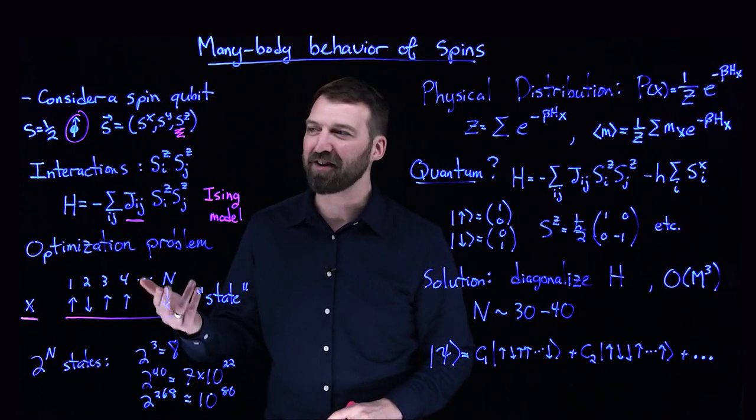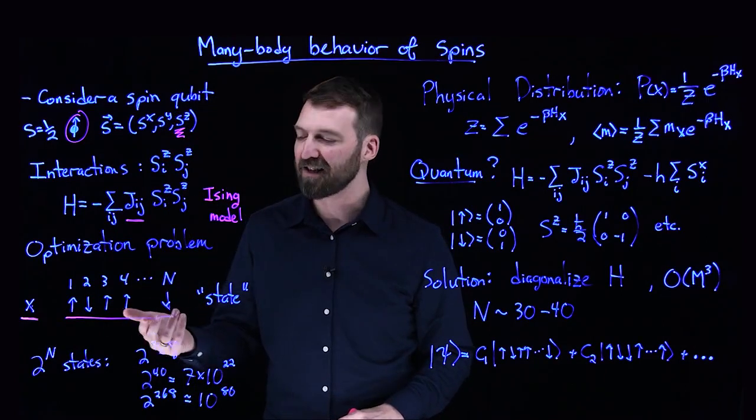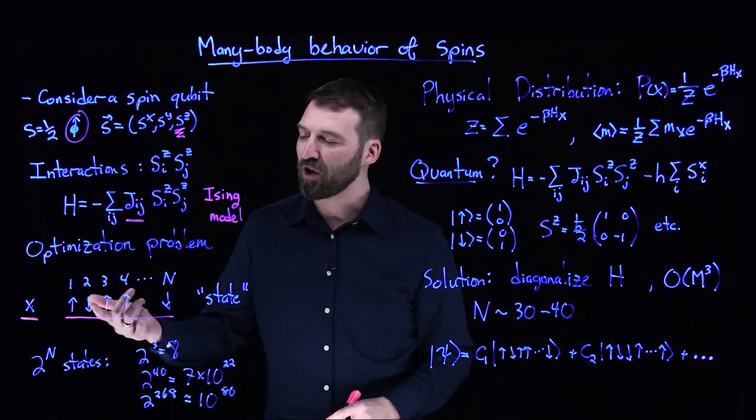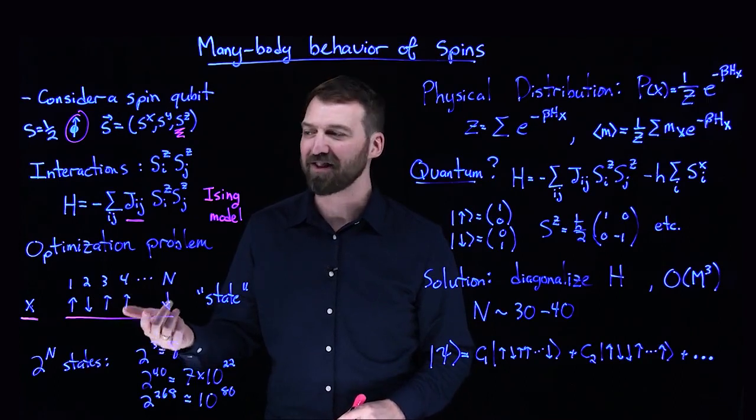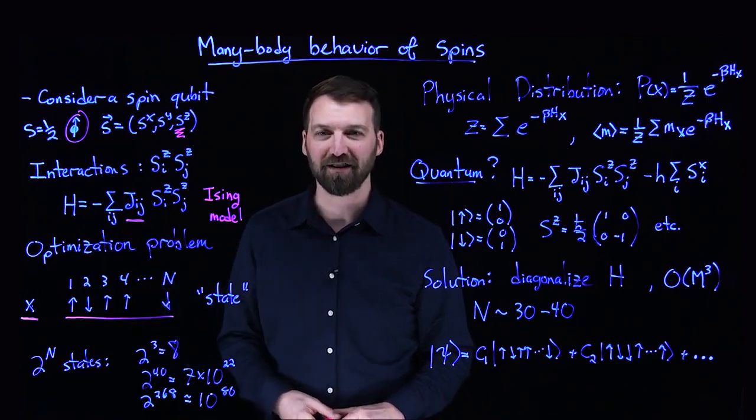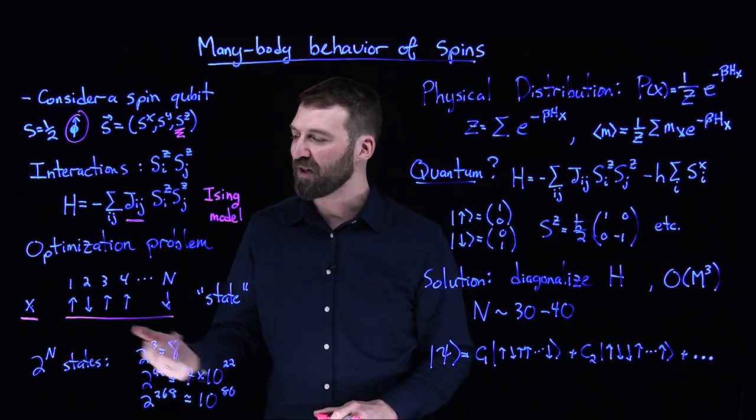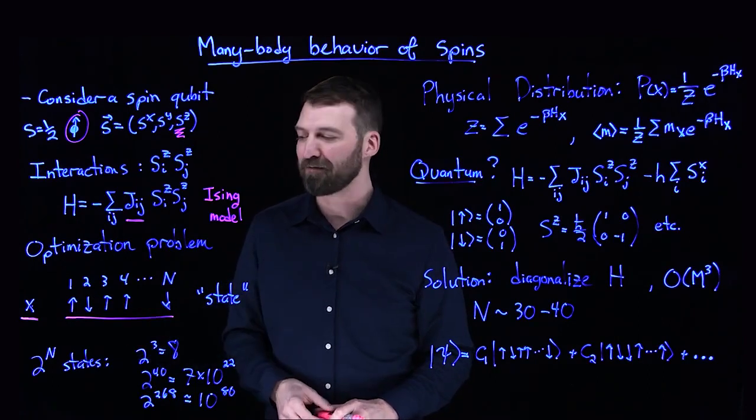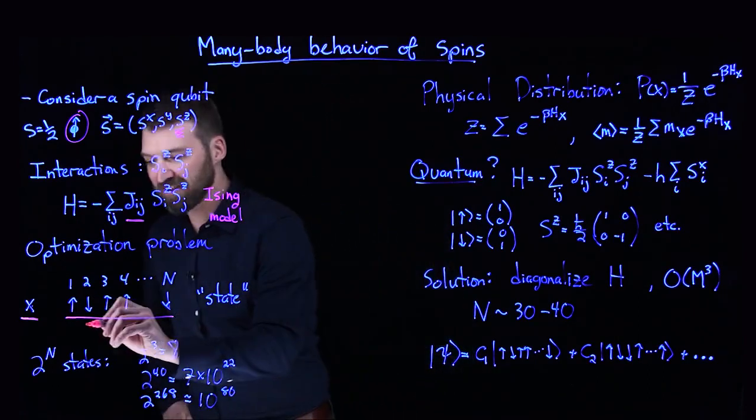There's N different spins in an SZ configuration. I look at all possible configurations and calculate the energy according to this Hamiltonian. That's one example of a state or configuration. I can imagine some other example.